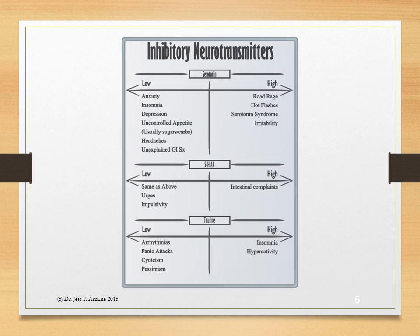Inhibitory neurotransmitters. One of the most recognizable inhibitory neurotransmitters is serotonin. That's because of the medications that are considered antidepressants that are serotonin reuptake inhibitors. When serotonin is low, you can have anxiety, insomnia, sometimes depression, uncontrolled appetite usually for sugars or carbohydrates, headaches, and unexplained gastrointestinal symptoms. This is because serotonin is the main neurotransmitter of the gastrointestinal tract.